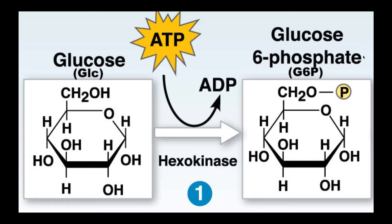Glycolysis is the metabolic process that serves as the foundation for both aerobic and anaerobic cellular respiration. The difference between aerobic and anaerobic has to do with whether there's oxygen present. Glycolysis takes place out in the cytoplasm, which is a very low oxygen environment, and glycolysis itself doesn't involve oxygen — so it's considered an anaerobic process. However, after glycolysis is complete, a decision has to be made: if oxygen is present, the process continues down the aerobic pathway; if oxygen is absent, it proceeds down an anaerobic pathway.